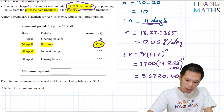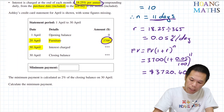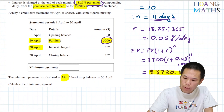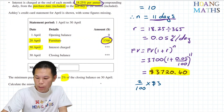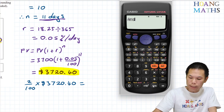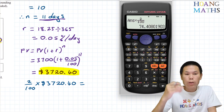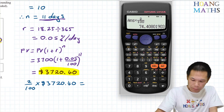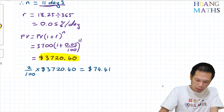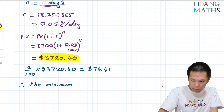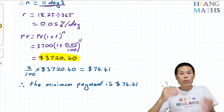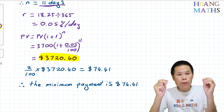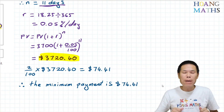That is the closing balance. Now to work out the minimum payment: Ashley needs to pay 2% of the closing balance. So 2% of $3,720.40: answer × 2/100 = $74.41. I hope you got it correct. Thank you so much for watching. Bye.